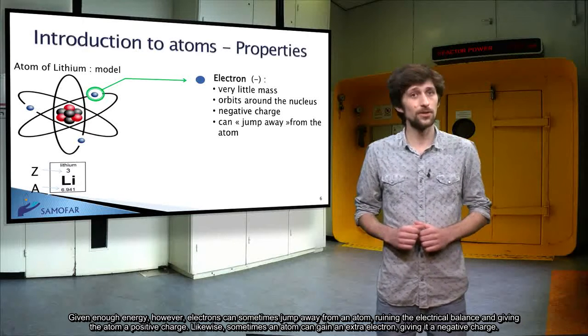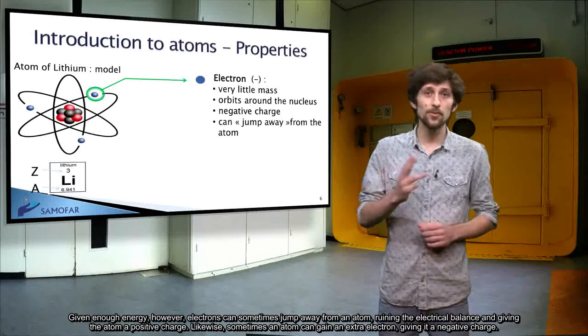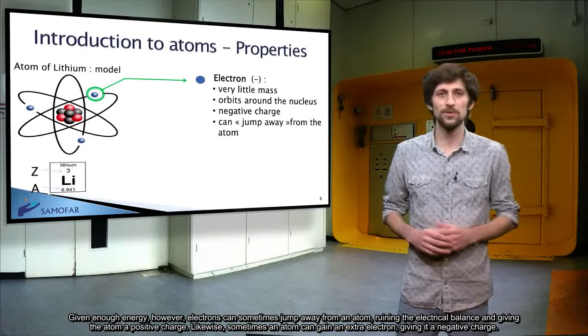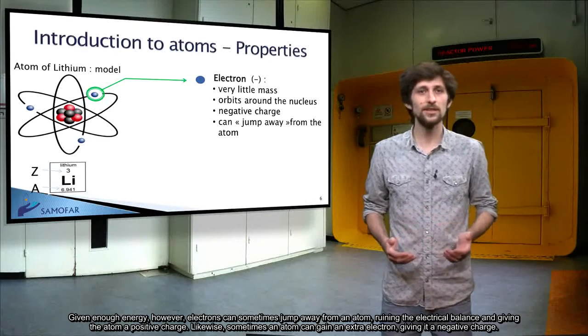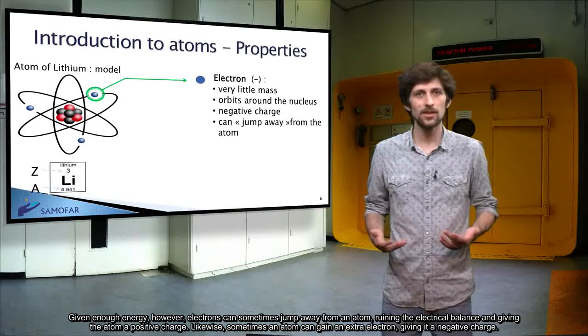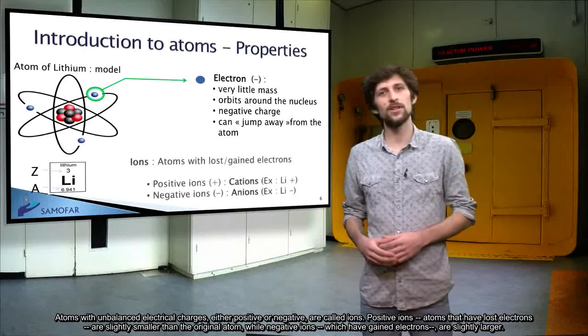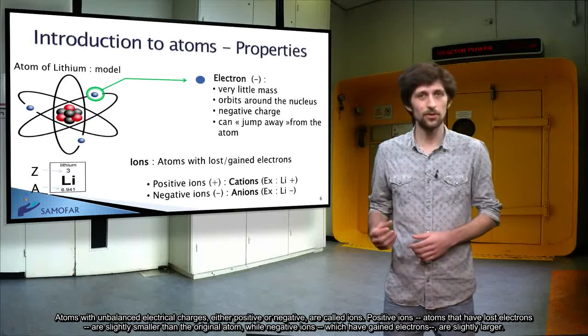Given enough energy, however, electrons can sometimes jump away from an atom, ruining the electrical balance and giving the atom a positive charge. Likewise, sometimes an atom can gain an extra electron, giving it a negative charge. Atoms with unbalanced electrical charges, either positive or negative, are called ions.